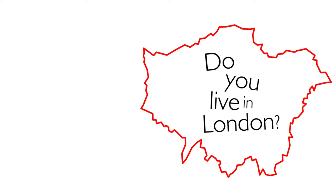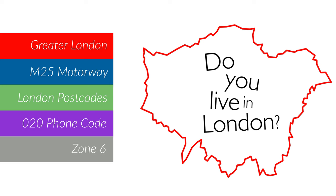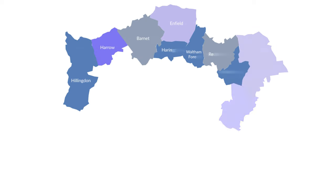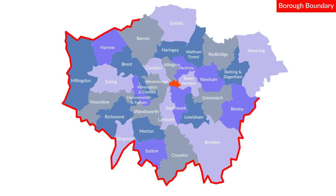Do you live in London? A simple question which should just be a yes or a no, but we thought we'd show you the various boundaries which often get used to define the edge of London so you can compare for yourself. Now of course officially there are 32 London boroughs plus the City of London, which if you draw a line around the edge leaves you with this as the official edge: the Greater London area.